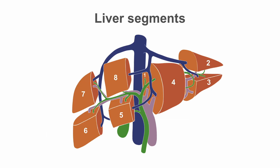The liver is organized into eight liver segments after the Couinaud classification. The classification divides the liver into eight functionally independent segments, as they all have their own segmental vessels. Normally segment four is divided into segment 4a and segment 4b, but for simplicity we will refer to this as segment four.